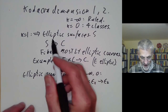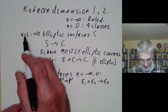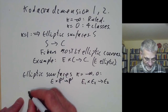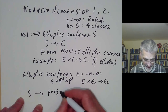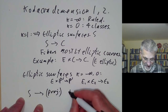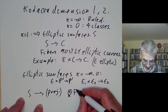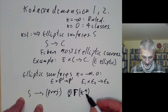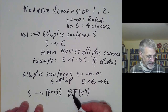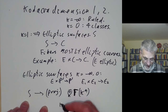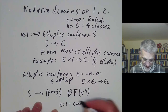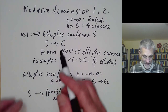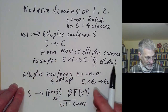The reason why Kodaira dimension 1 gives you elliptic surfaces is that for any surface we have a map to some projective space, corresponding to the graded ring given by the sum of global sections of nth powers of the canonical bundle. This is always some projective variety or empty. If the Kodaira dimension is 1, this space is a curve, and you can check that the fibres are mostly elliptic curves, making it into an elliptic surface.